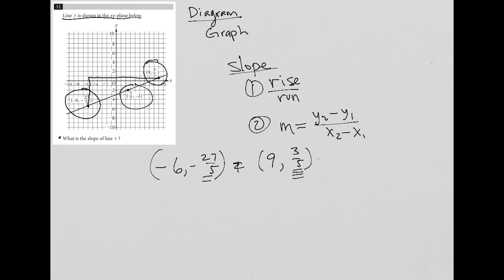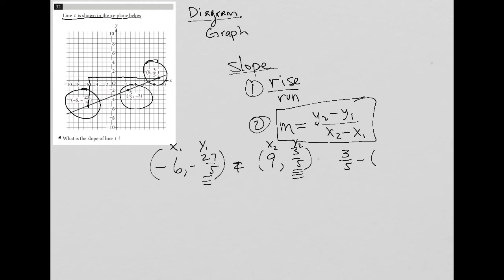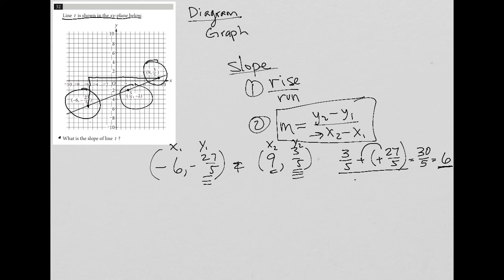It's really because of the fractions — my Y value in both cases already has a common denominator, which is going to help me out a lot. So if this is X1, Y1 and this is X2, Y2, then Y2 minus Y1 gives me three fifths minus negative 27 fifths. That negative times negative makes it positive, and when I add those together I get 30 fifths, and 30 divided by five is six. The math became super easy because the denominators were already the same. Now for X2 minus X1, that's nine minus negative six, which again is positive: nine plus six equals 15.